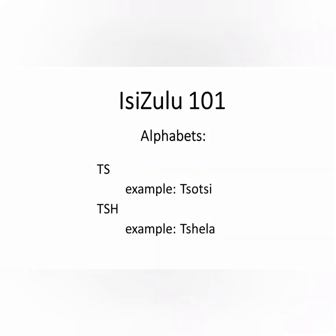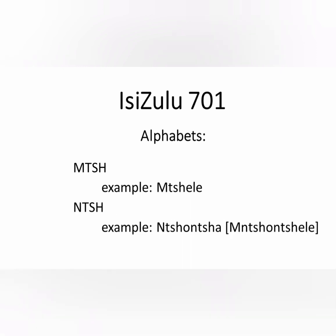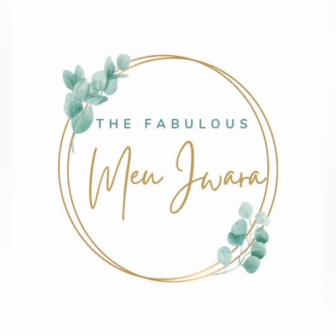Now let's add an S after the T — the sound becomes TS. Example: 'itshe' — a dog. And the sound for TSH is TSH. Example: 'chela' — to tell. So TS is TS, and TSH is TSH. For advanced combinations: MTSh gives the sound MTSH. Example: 'mcheli' — tell her or tell him. If we substitute the M with N, NTSH is NCH. Example: 'nchoncha' — still. And when we add M before NTSH, it becomes MTSH. Example: 'mchonchele' — steal from her or him. Don't do that in real life though — we're just learning words!